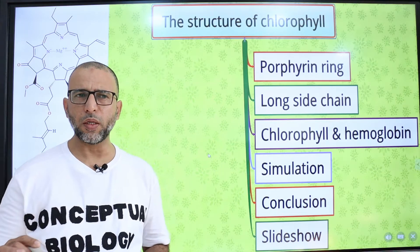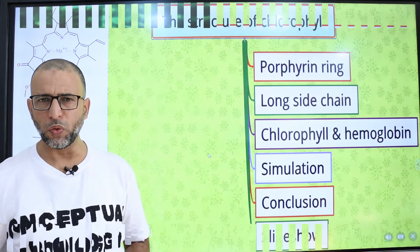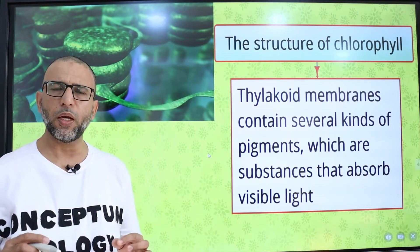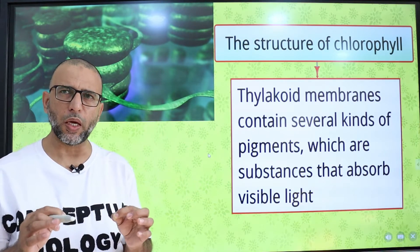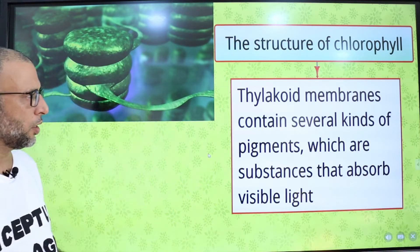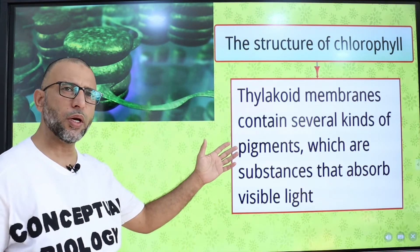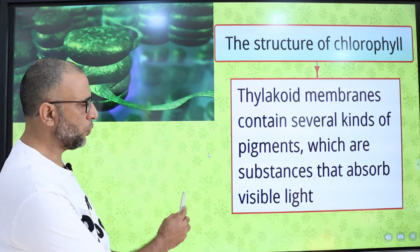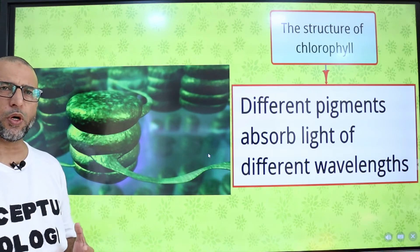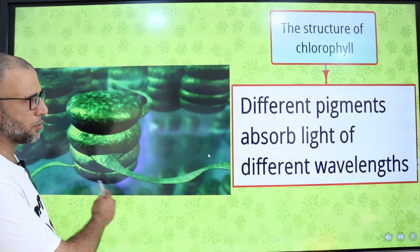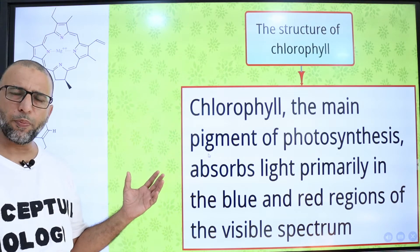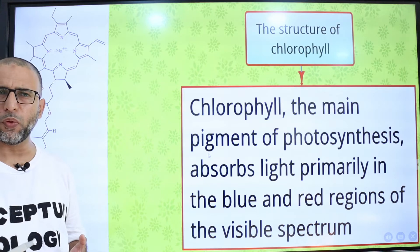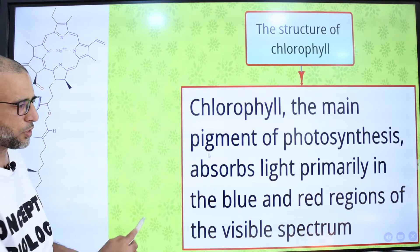The green wavelengths are reflected, giving a green color to plants. Chloroplasts contain a membrane system — the thylakoid membrane — which forms flattened closed sacs called thylakoids. Thylakoid membranes contain several kinds of pigments, which are substances that absorb visible light. Different pigments absorb light of different wavelengths. Chlorophyll is the main pigment of photosynthesis, absorbing light primarily in the blue and red regions of the visible spectrum.